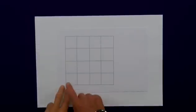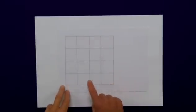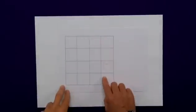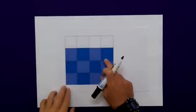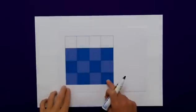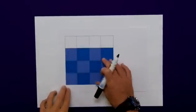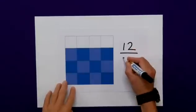It doesn't just apply to circles. Here I have a large square which I've divided into 16 equal parts, into sixteenths. Again, I've shaded in a number of them. In fact, I've shaded in 12 of these 16 parts, so my fraction that is shaded is 12 sixteenths.